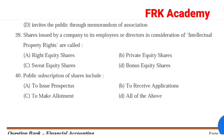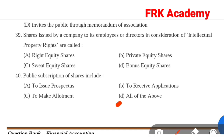Question 40: Public subscription of shares includes. Option A: to issue prospectus. Option B: to receive applications. Option C: to make allotment. Option D: all of the above. Answer: Option D, all of the above.